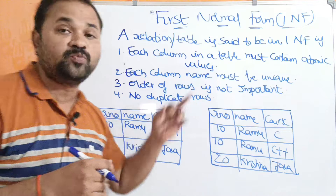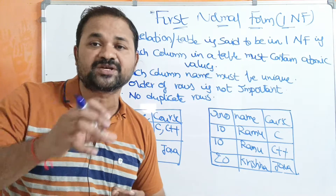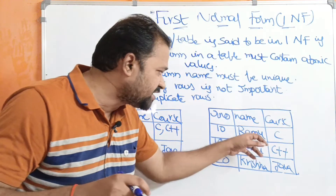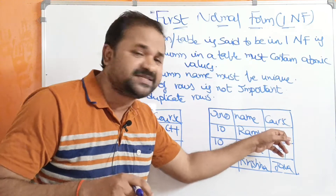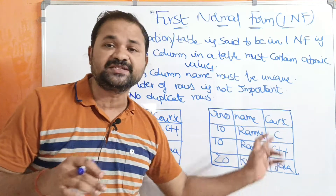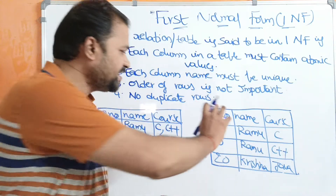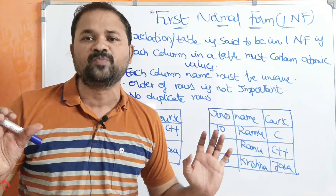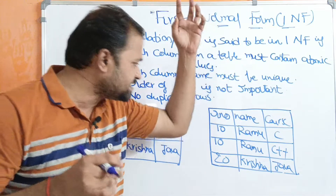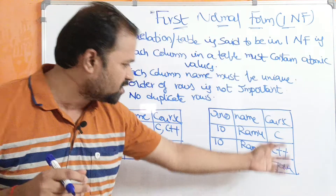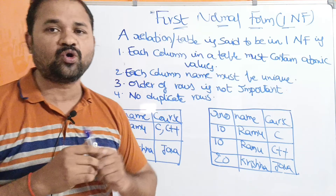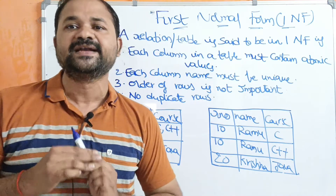The fourth condition is: no duplicate rows are allowed. If we observe the first two records, the first record specifies Ramu registered for C, and the second record specifies Ramu registered for C++. These two rows are not duplicates. So all the conditions are satisfied, and this is the output table after applying the first normal form. This is about 1NF in DBMS.